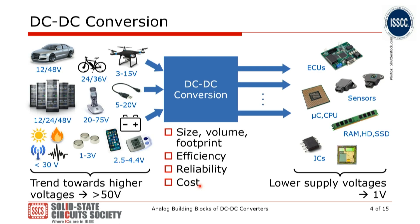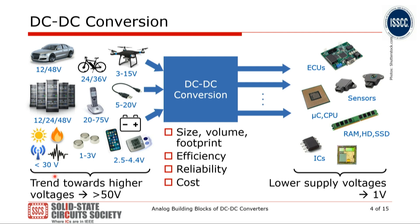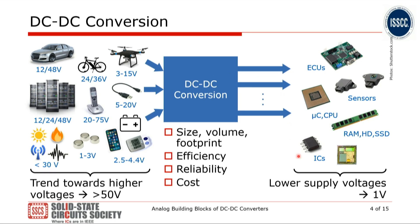DC-DC conversion is the key element of the growing field of power management. We see a variety of energy sources with voltages that range from a few millivolts in the case of energy harvesting towards quite high voltages in the range of up to 100 volts — for instance, 48 volts in automotive or in the field of IT servers. DC-DC converters convert these voltages into IC-level voltages, which have gone down over the last few years to levels as low as 1 volt.